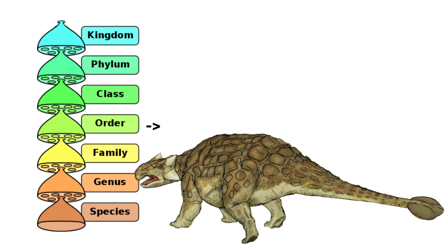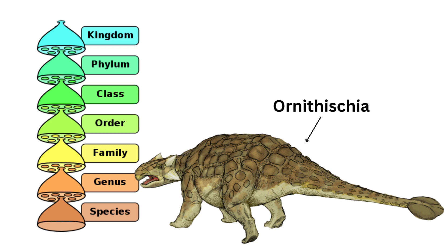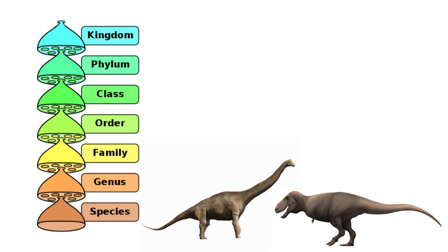Now, the order level. Orders are subdivisions within a class that group together closely related families. Dinosaurs can be divided into two main orders depending on their hip structure: Saurischia and Ornithischia. Our Ankylosaurus falls into the order Ornithischia, which includes all four-legged dinosaurs, except for sauropods. Sauropods and theropods like T-Rex and raptors belong to the order Saurischia.